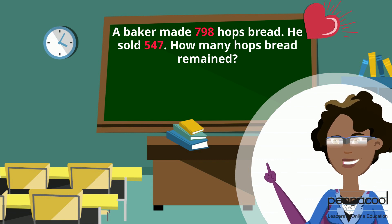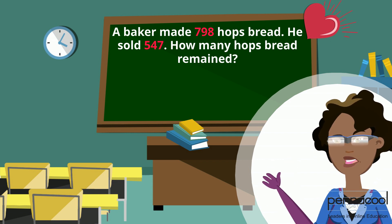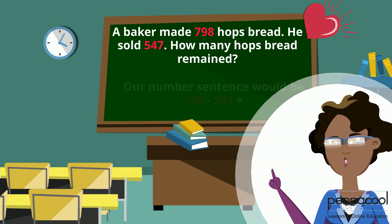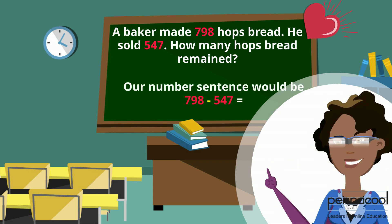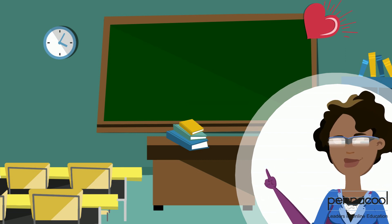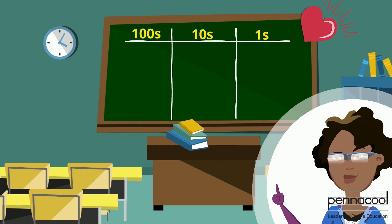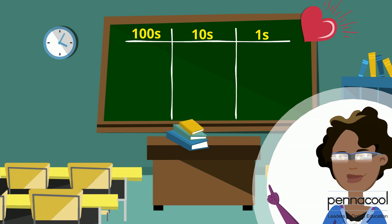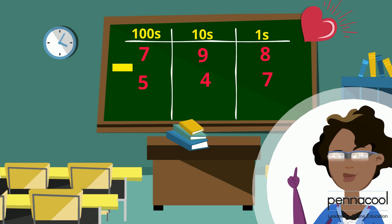For this question we have to subtract our smaller number from our bigger number. Our number sentence would be 798 take away 547. Let's place our numbers into the place value chart with our bigger number on top and begin our subtraction.